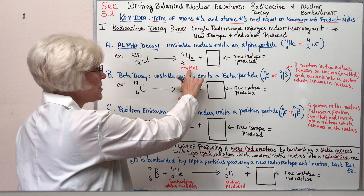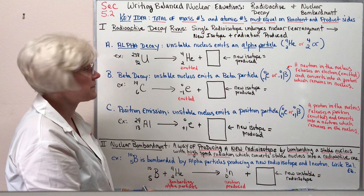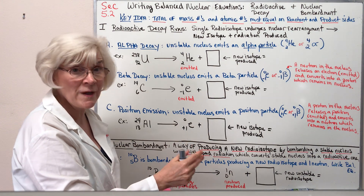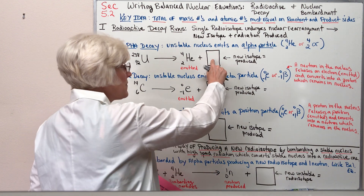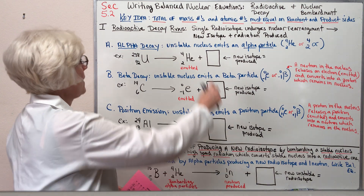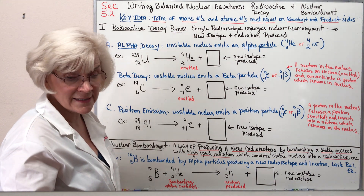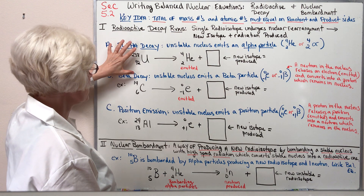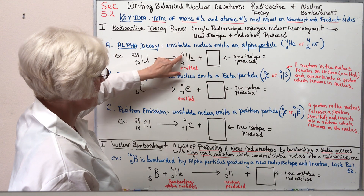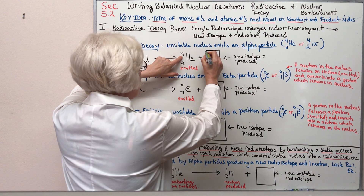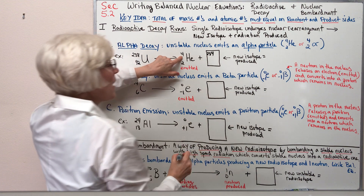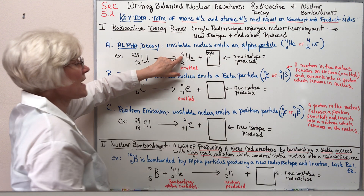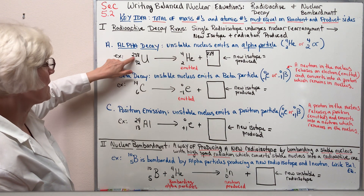When the uranium-238 nucleus undergoes rearrangement, it emits an alpha particle. Once the nucleus emits an alpha particle, it no longer has the same composition, so a new identity of an atom is produced. Using the key idea that mass numbers and atomic numbers have to balance on both sides: the total mass number on the reactant side is 238. On the product side we have a mass number of 4 for the alpha particle, so the new isotope must have a mass number of 234, because 234 plus 4 equals 238.